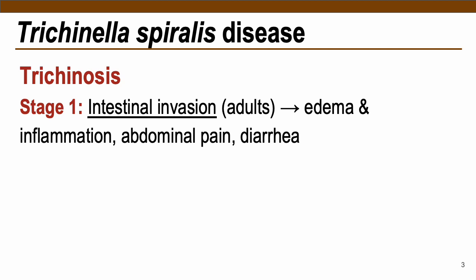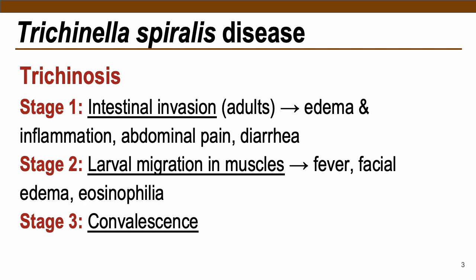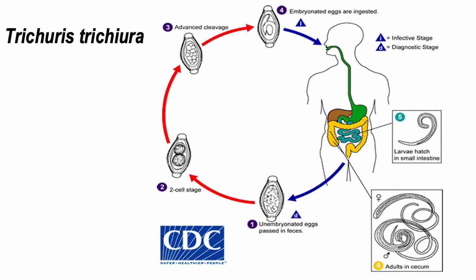Stage 1 involves the intestinal invasion of adults. Stage 2 is the larval migration, where larvae travel from the intestine to your muscles for encystation. And lastly, stage 3 is the convalescent stage, where the encysted larvae is already in your tissue and do not cause any signs and symptoms to the infected patient or person.